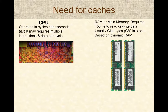CPUs operate in nanoseconds — they are really fast. However, RAM or main memory has a high latency and getting data from memory can be slow. For example, CPUs can operate in nanoseconds while reading data from memory can take about 50 nanoseconds, even in some of the fastest RAM modules available today.